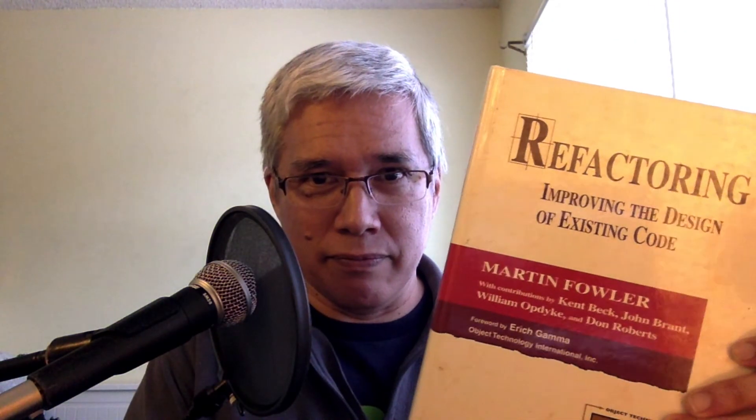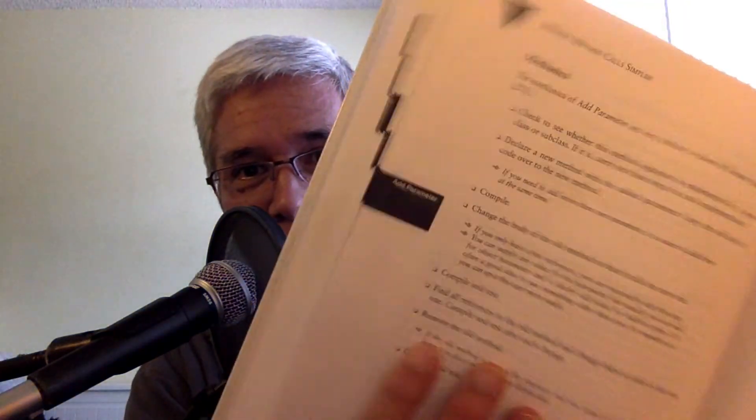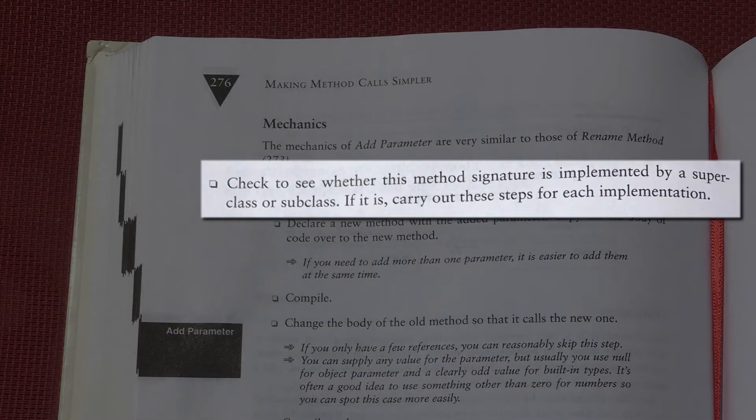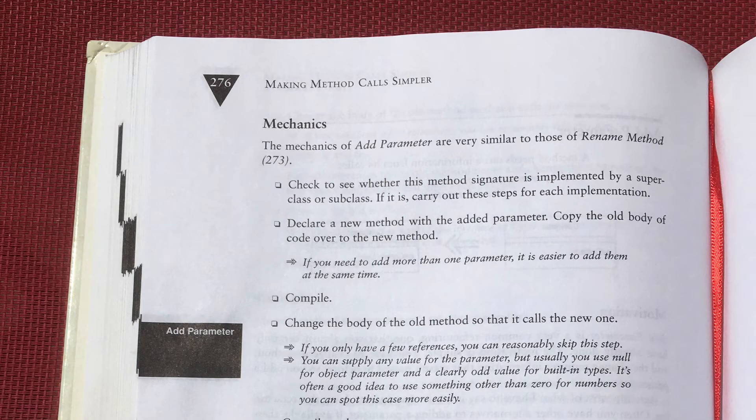Instead, we open the inner flap of the book, which has the list of refactorings — a whole bunch of stuff. We go to the first one, Add Parameter, look it up, find it. It explains everything about Add Parameter, including a list of steps under Mechanics. Let's follow these steps. First, it says check to see whether this method signature is implemented by a superclass or subclass. Well, this is a struct, so no. Next step.